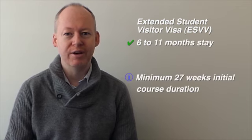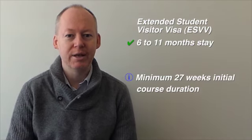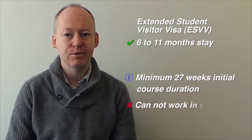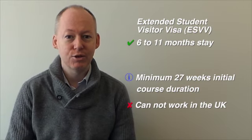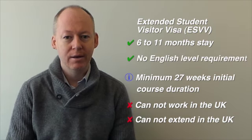The Extended Student Visitor Visa allows you to study in the UK for a period of six to eleven months. Your initial course reservation must be of 27 weeks or more to be able to study with this visa type. As with the Student Visitor Visa, it does not give you the right to work in the UK, it can't be extended in the UK, and there is no English level requirement. So if your aim is to study between six and eleven months, this is the most suitable type.